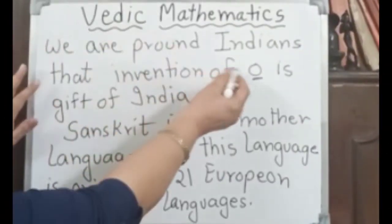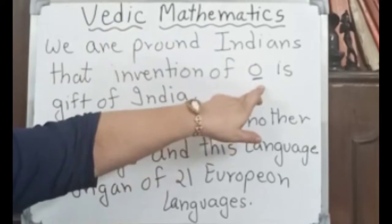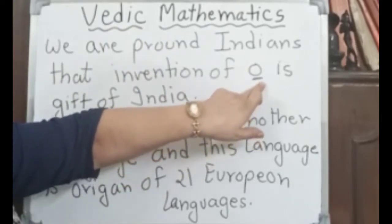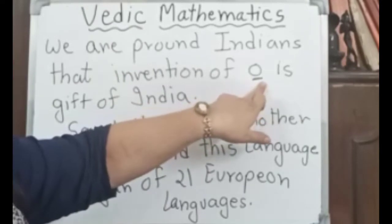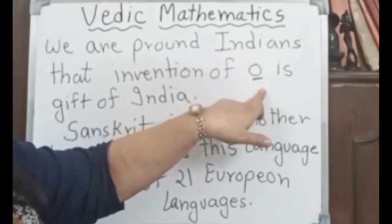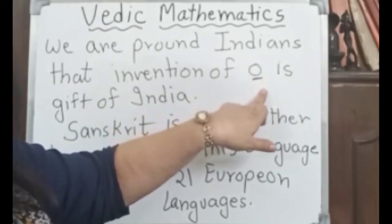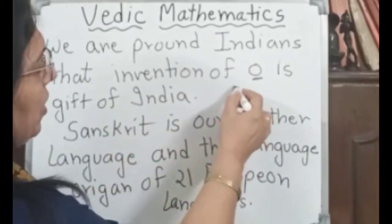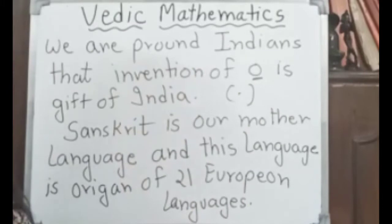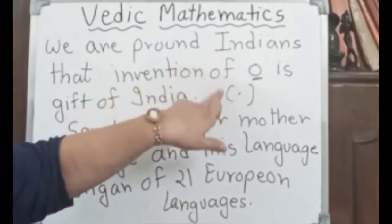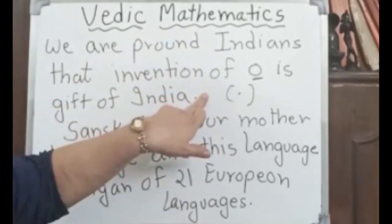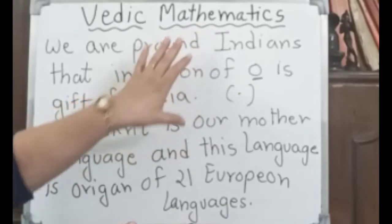We are proud Indians that the invention of zero is a gift of India. Vedic Mathematics is the origin of present arithmetic, present mathematics, and it is connected to Sanskrit and maths.